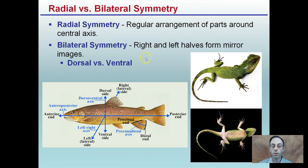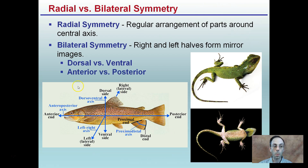We want to talk about dorsal versus ventral — terms I'll use when we get into body systems. The dorsal side is the top; think of the dorsal fin of a dolphin. The ventral is the underside of the fish. Anterior is towards the head, and posterior is towards the tail. So this would be the anterior portion, and this would be the posterior portion where the tail is located — key terms you should be familiar with.